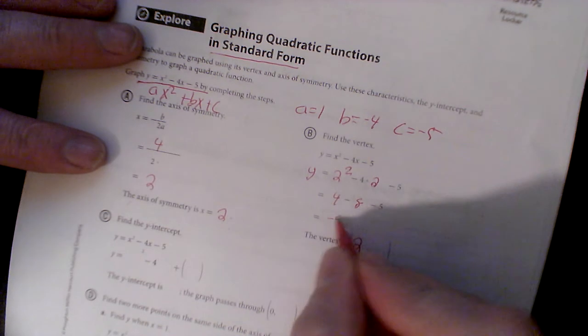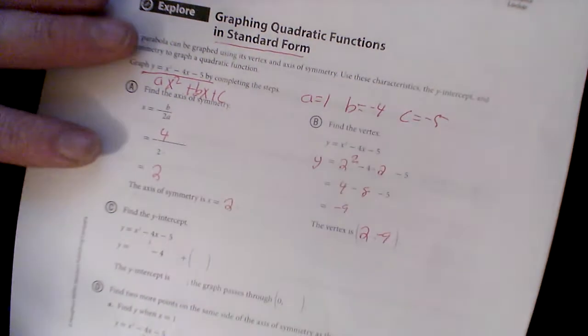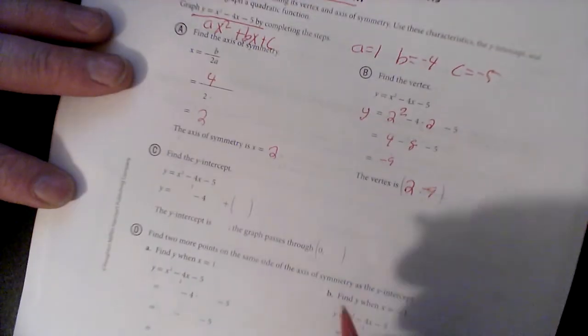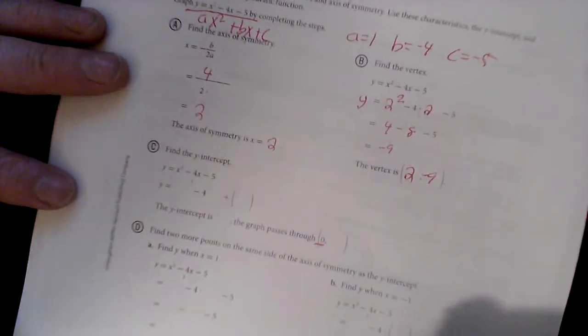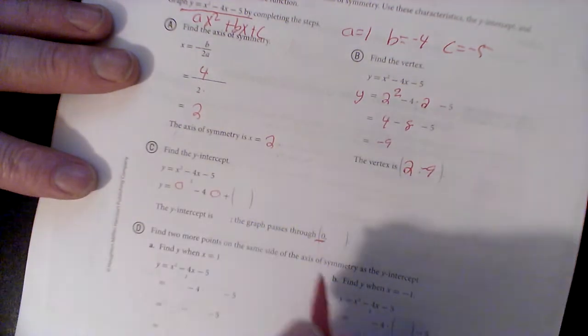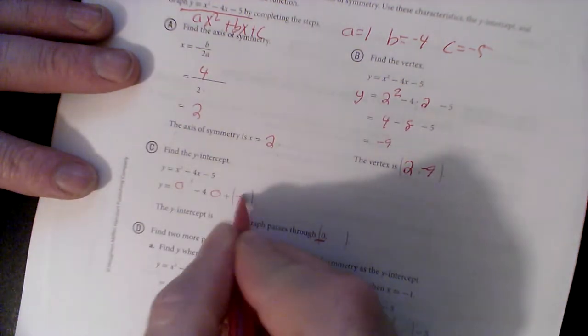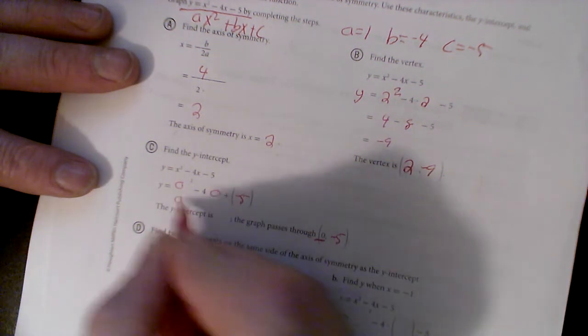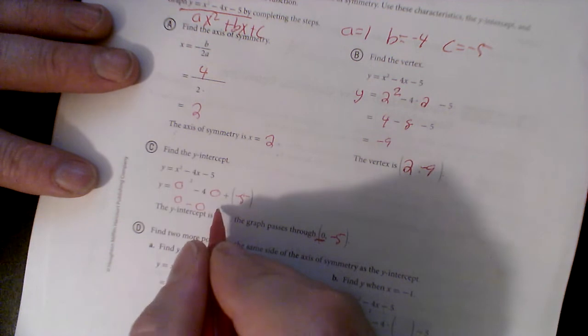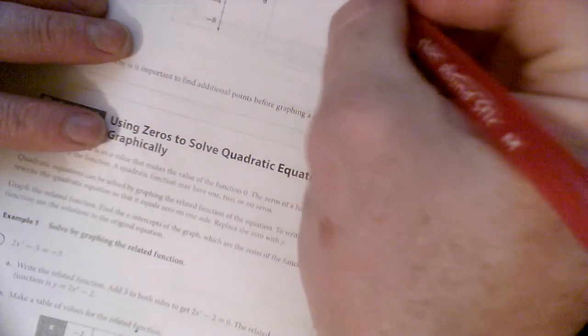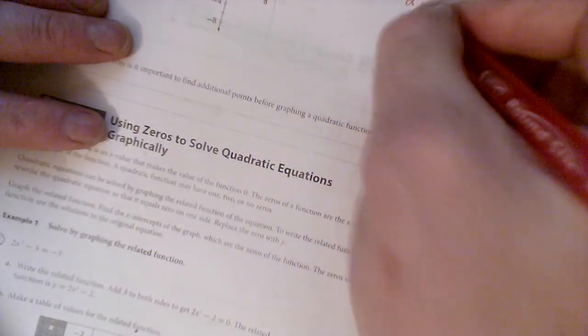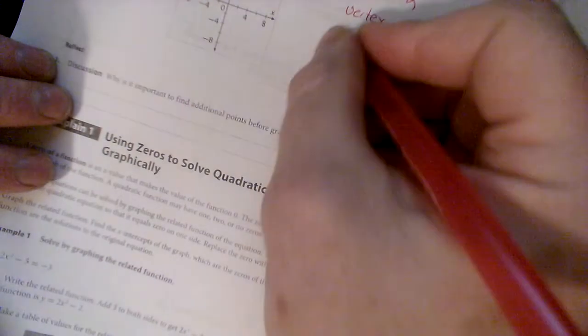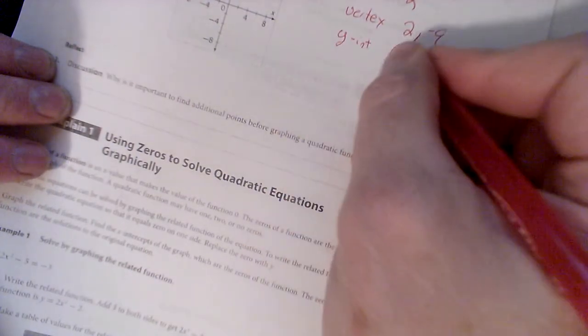2 squared is 4, minus 4 times 2 which is minus 8, minus 5, negative 4 minus 5, negative 9. So it's 2, negative 9. All right, and your y-intercept is important. I'm running y-intercept is whenever your x value is 0, so if I plug in 0 there, that's 0 squared minus 4 times 0 plus negative 5. I don't know why they changed that sign right there, but it's just negative 5, or 0, negative 5.